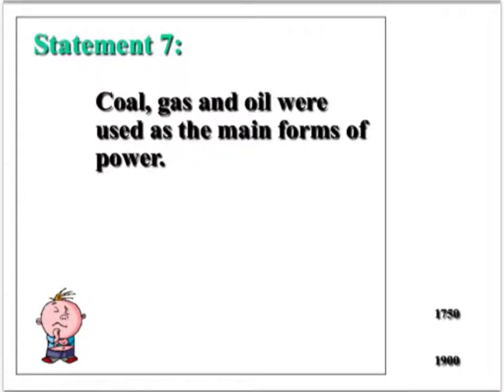Statement 7: Coal, gas and oil were used as the main forms of power in 1900, part of our industrial revolution.